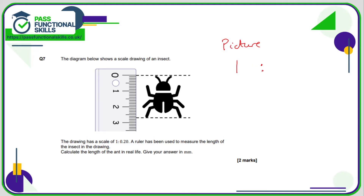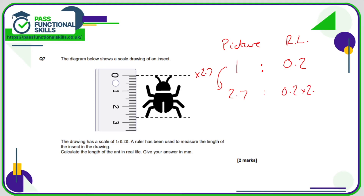Question seven is a scale drawing of an insect where the drawing is bigger than real life. One centimeter on the picture represents 0.2 centimeters in real life. The measured length of the ant on the picture is 2.7 centimeters, so in real life it's 0.2 multiplied by 2.7, which is 0.54 centimeters. Converting to millimeters by multiplying by 10 gives 5.4 millimeters.